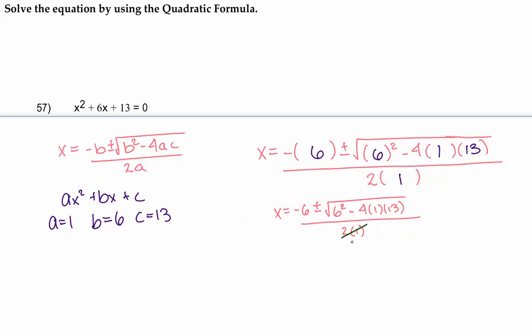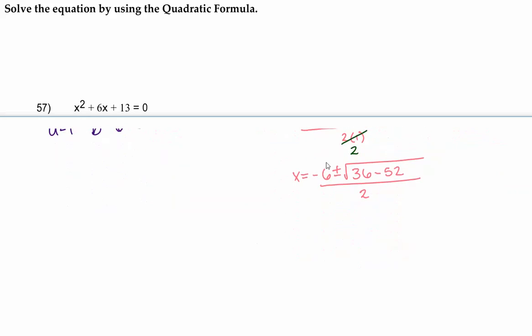Over here, this 2 times 1 just makes 2. This 4 times 1 times 13 makes 52. And then this 6 squared is 36. So let's rewrite that with our new simplified numbers. 36 minus 52 gives us negative 16.